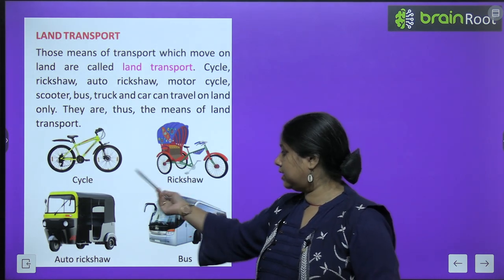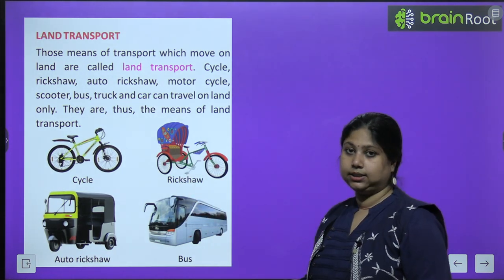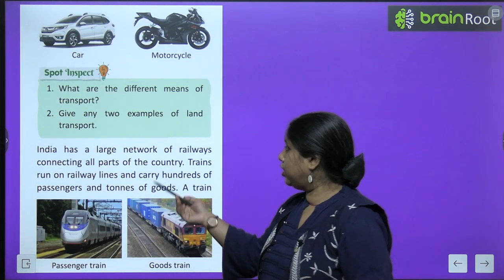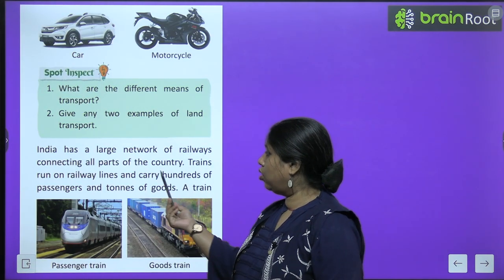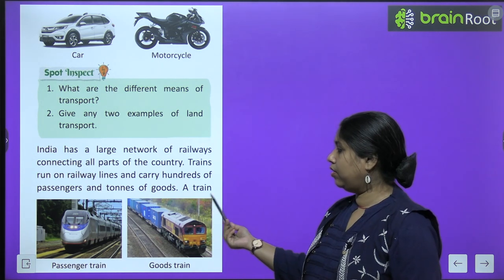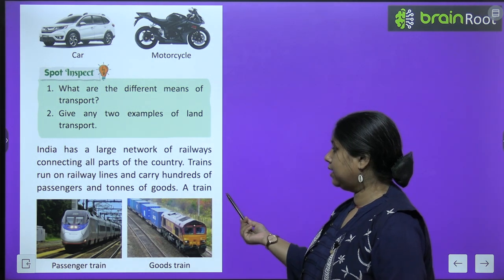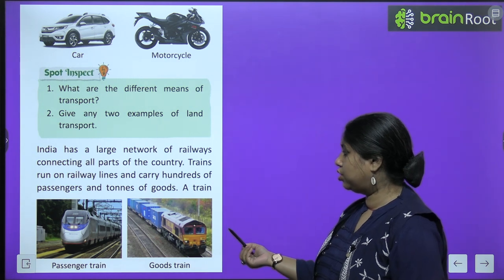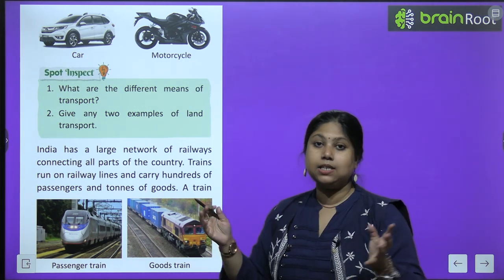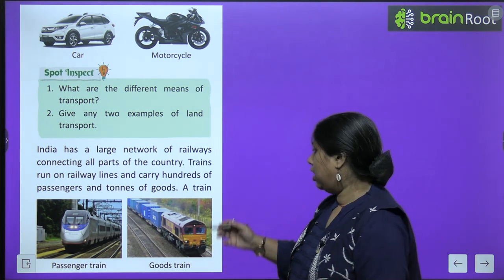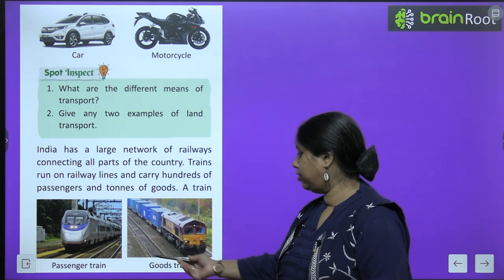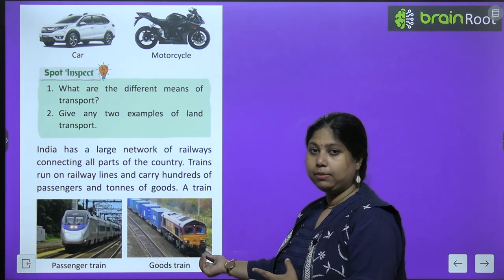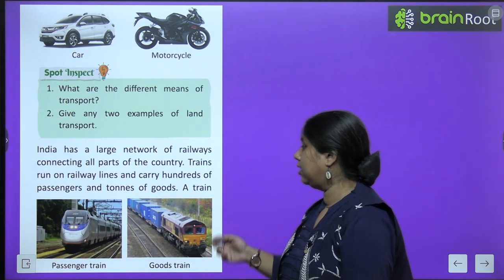See the pictures: cycle, rickshaw, auto rickshaw, bus. India has a large network of railways connecting all parts of the country. Trains run on railway lines and carry hundreds of passengers and tons of goods. This is a passenger train and this is a goods train — the goods train is called a malgaadi.